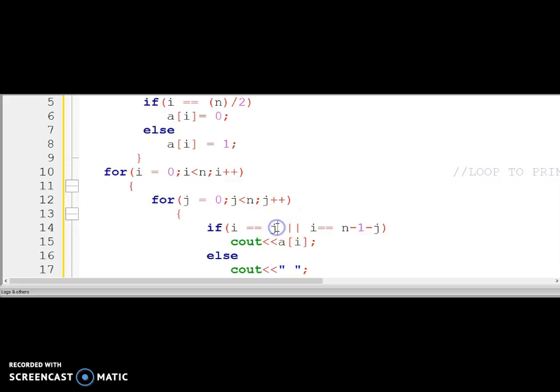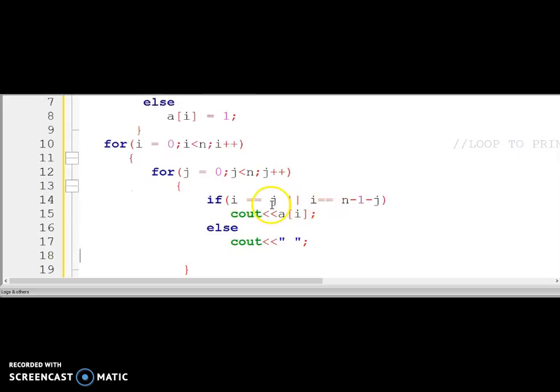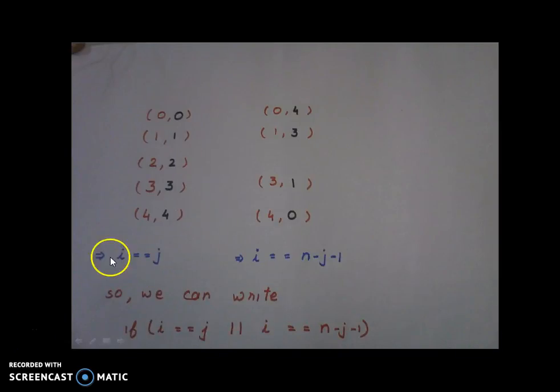As I have shown, the two conditions which I said: i equal to equal to j and i equal to equal to n minus 1 minus j. These are the two conditions which had to be satisfied for printing in the X pattern which I have shown in the slides. I have created an if loop. The same I am writing in my program.